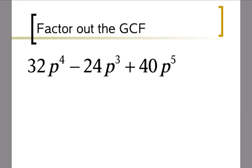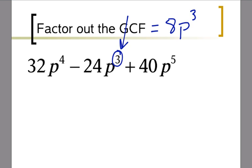Let's look at another one with variables in common. Looking at 32, 24, and 40, the biggest number they all share is 8. So the GCF will include 8, and they also share a p. Looking for the lowest exponent on p — that's 3 — so p cubed is the greatest amount they have in common. The lowest exponent gives you the biggest amount in common, meaning GCF is 8p cubed.